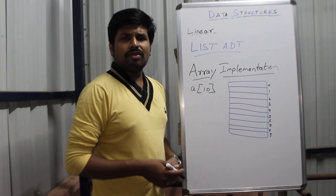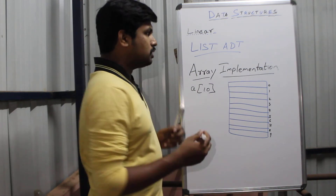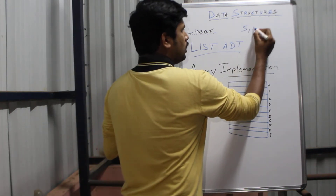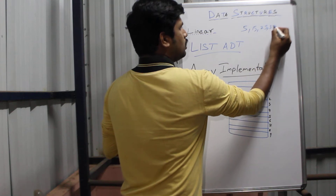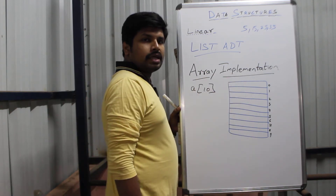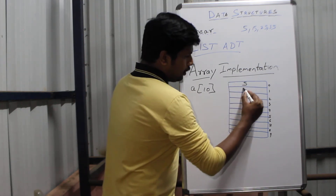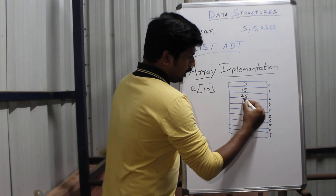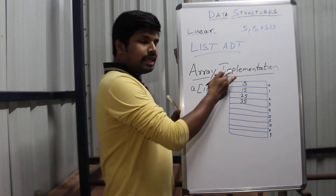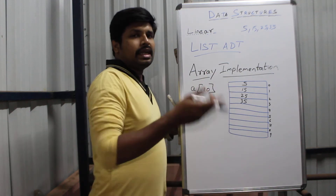Let's perform a series of actions in this array implementation concept. The first instruction is we are going to insert the value 5, and then we are going to insert a few more values: 15, 25, and 35. In an empty array, when we insert an element it automatically goes into the first cell, followed by the next element and the next. We are inserting each and every element at the end of the list.